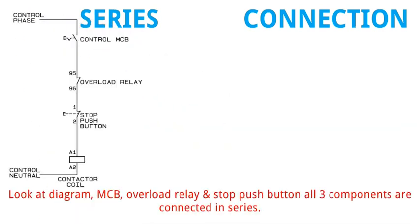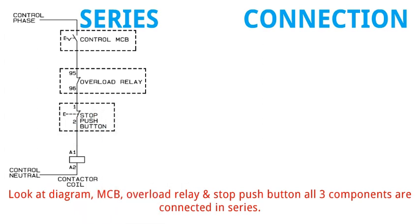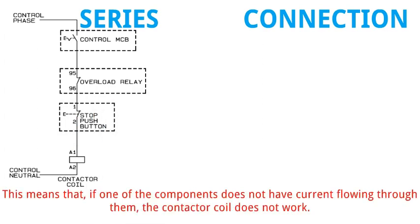Look at diagram. MCB, overload relay, and stop push button. All three components are connected in series. This means that if one of the components does not have current flowing through them, the contactor coil does not work.